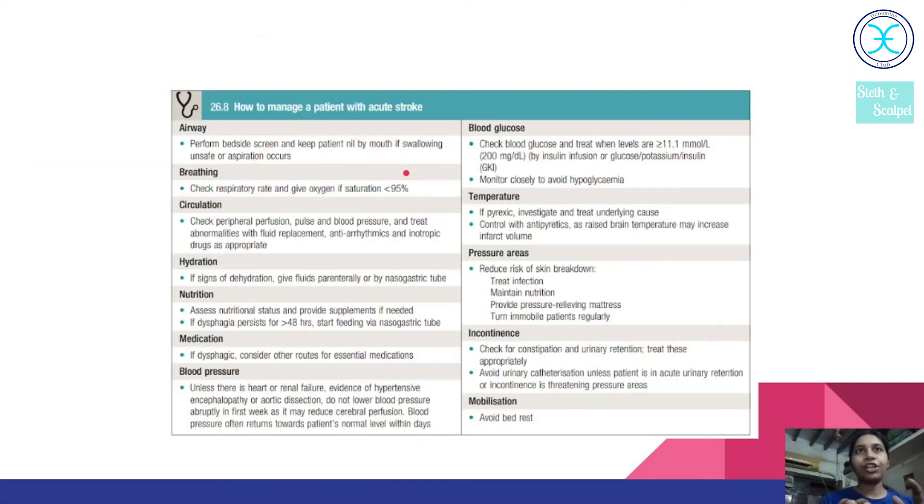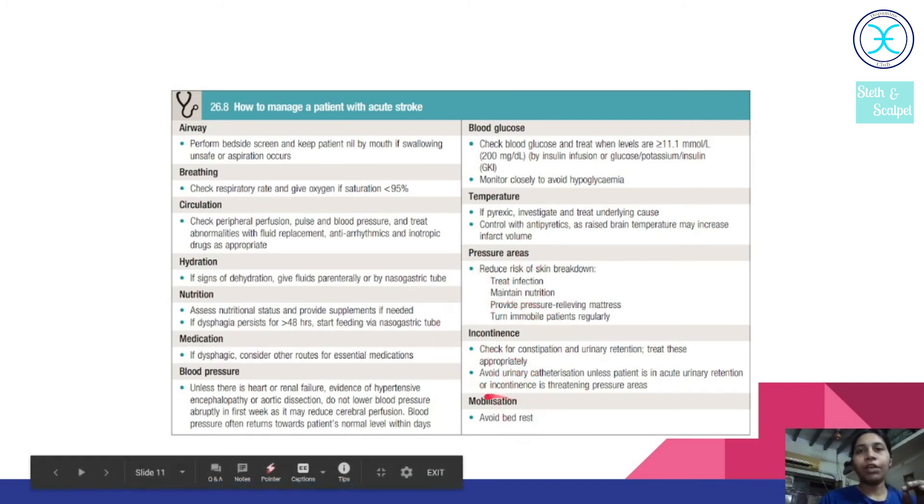Now how to manage any patient with an acute stroke? For any trauma or management, we have to look for airway, breathing, circulation, which is the most important part. Here also same. The airway, breathing, circulation is maintained, and then we additionally give hydration, nutrition, and then medication for dysphagia. And then we control the BP, blood glucose. We monitor the blood glucose and here temperature. See, for basically the ischemic stroke, if the patient is pyrexic it leads to more morbidity. So we have to control the pyrexia along with the treatment of the stroke. This is an important point to remember. And then we look for the management of incontinence and we have to mobilize the patient.